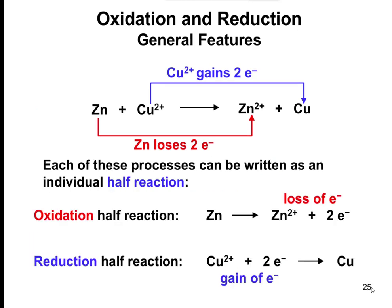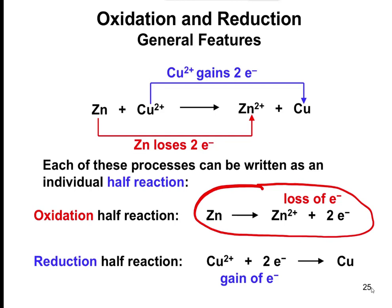We can take this reaction and break it down into what's referred to as half reactions. We can look at what is happening in the oxidation part of this reaction. Zinc is losing two electrons and going to Zn²⁺, so we can write that as a half reaction: zinc reacts to form Zn²⁺ plus two electrons. Those electrons are lost from the original zinc.